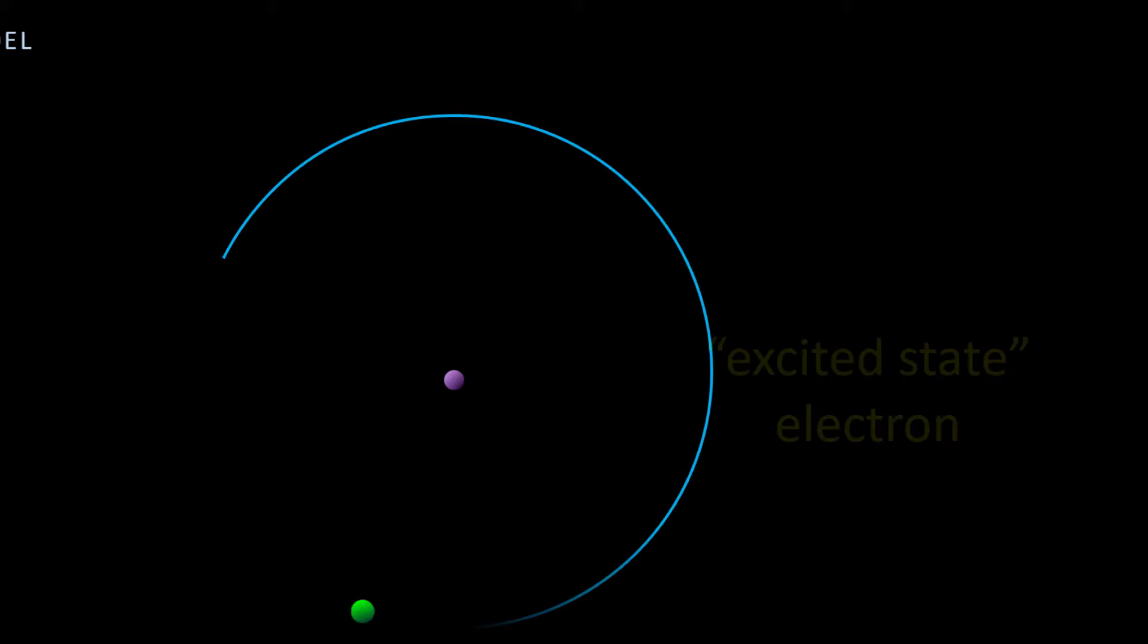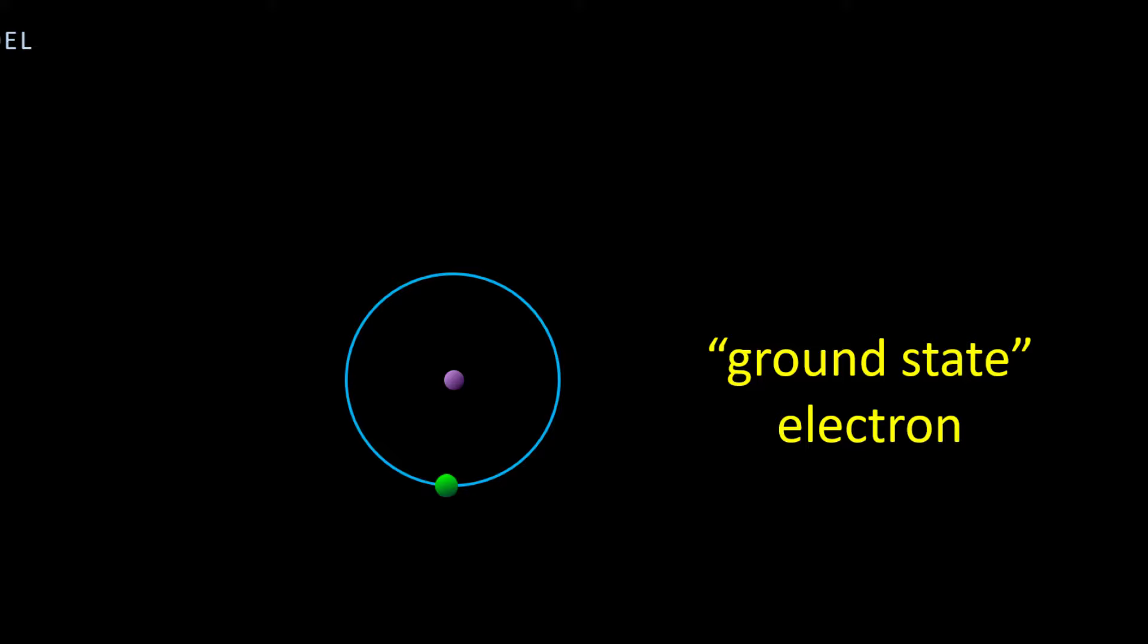Ground state electron, excited state electron, and ground state electron. The amazing thing is that Bohr's model was able to account for the emission spectra of all the other elements, and so it became a very powerful model from which to build the current model of the atom, the quantum mechanical model.